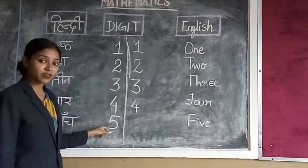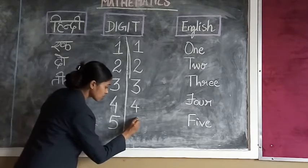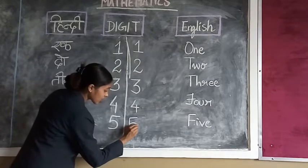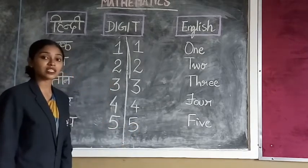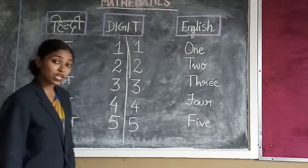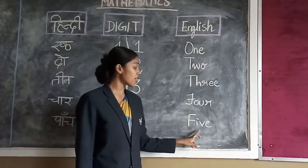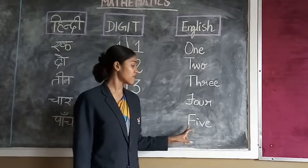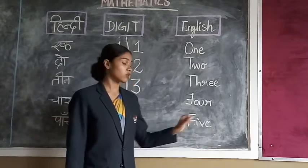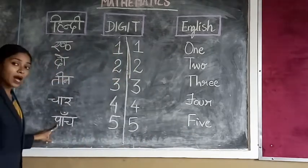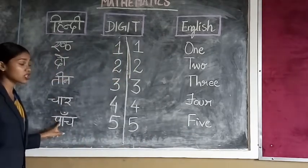Then next, five. Line, down line and a curve. What is the spelling of five? F-I-V-E. And in Hindi, what is the spelling of five? Paanch.